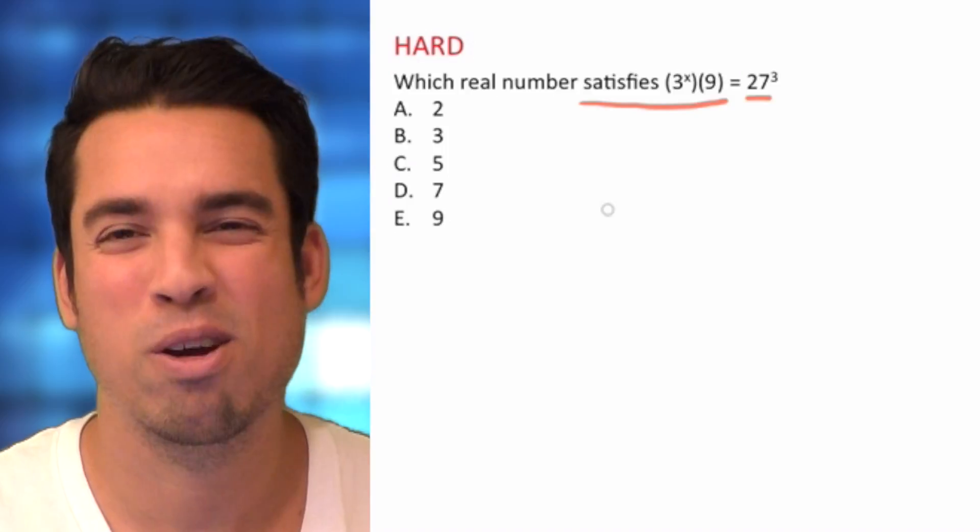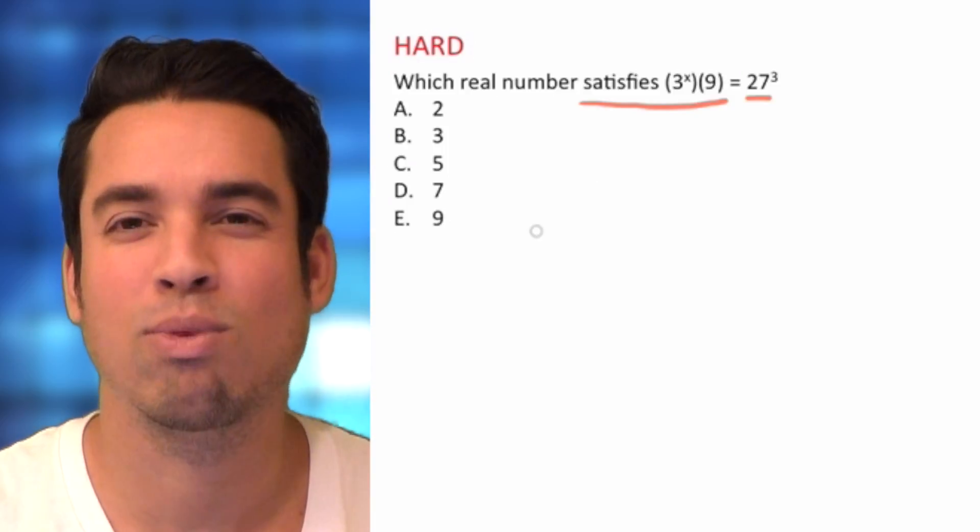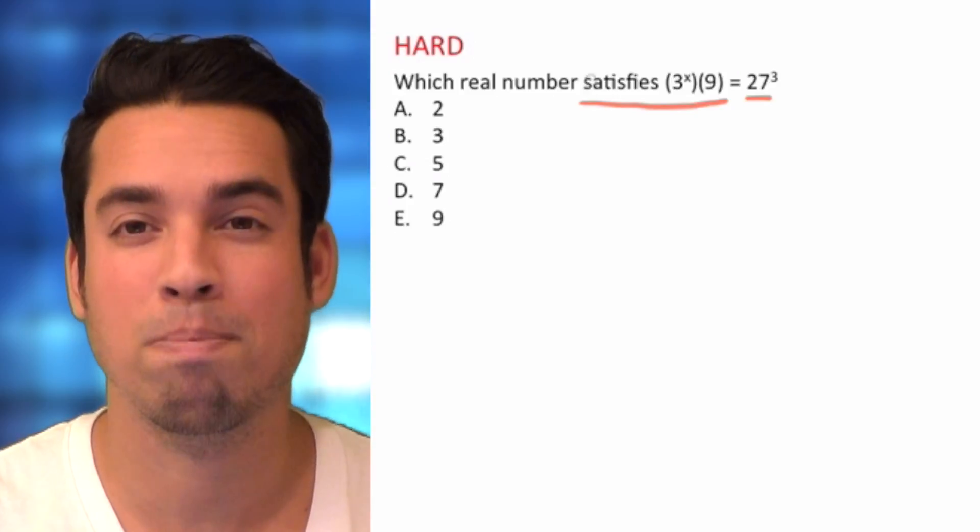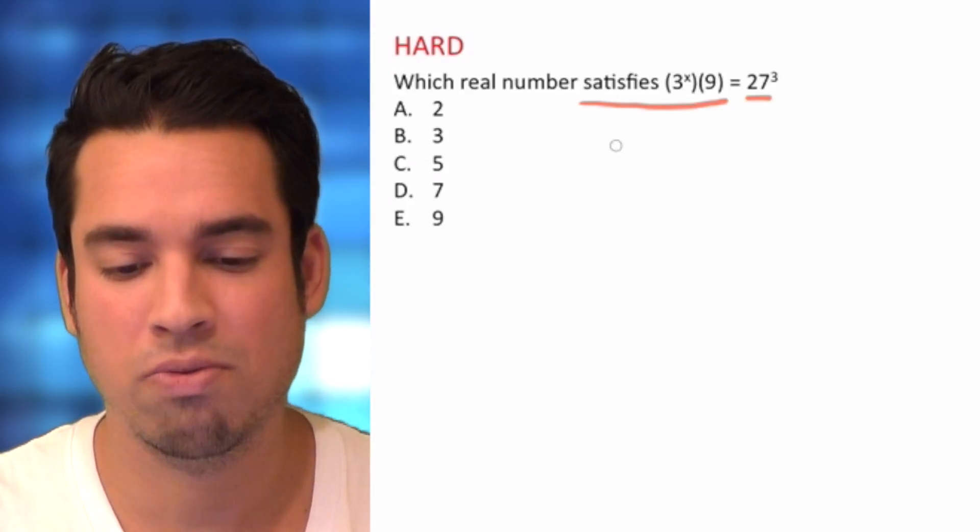I mean, we could sort of variable isolate, we could divide 27 to the third by 9 and then try and guess what the exponent is, but it's not the best way. The best way is good old-fashioned change of base.